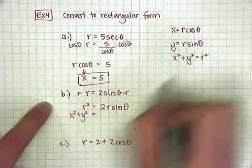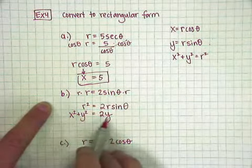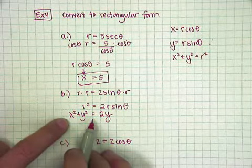And then r squared, I could sub out for x squared plus y squared. And then this r sine theta, I can sub out for y. And now I have an equation in rectangular coordinates.